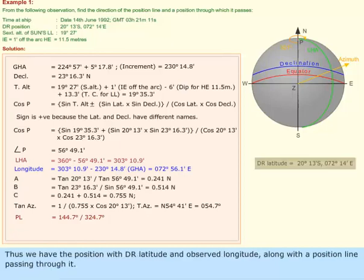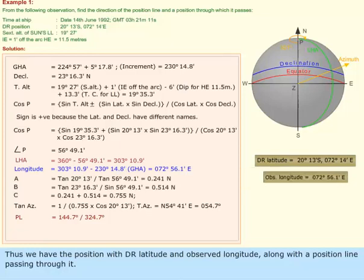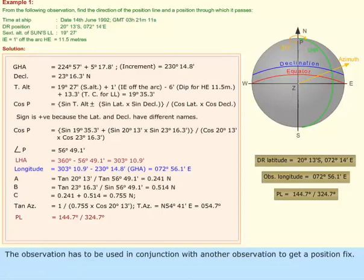Thus, we have the position with DR latitude and observed longitude, along with a position line passing through it. The observation has to be used in conjunction with another observation to get a position fix.